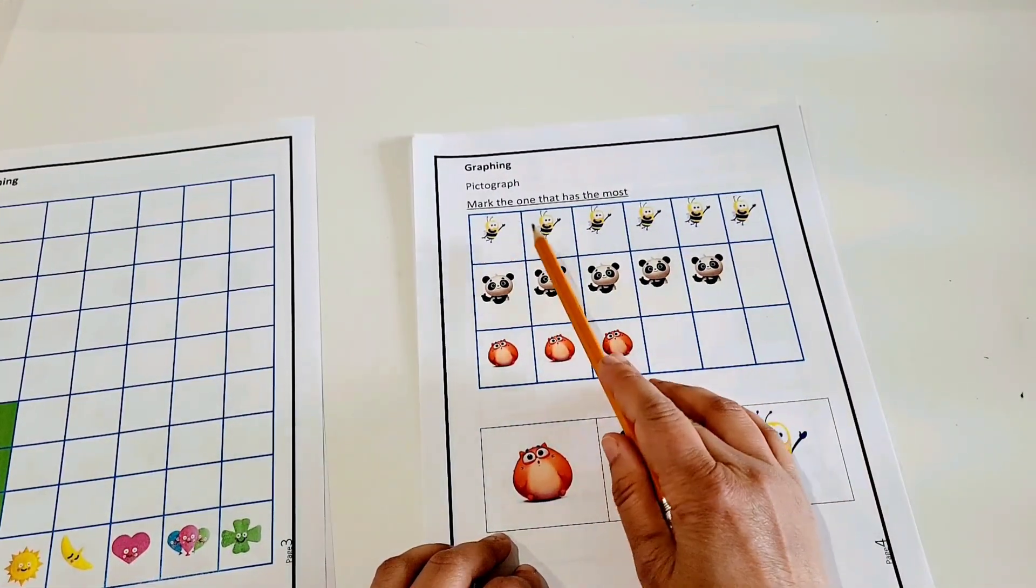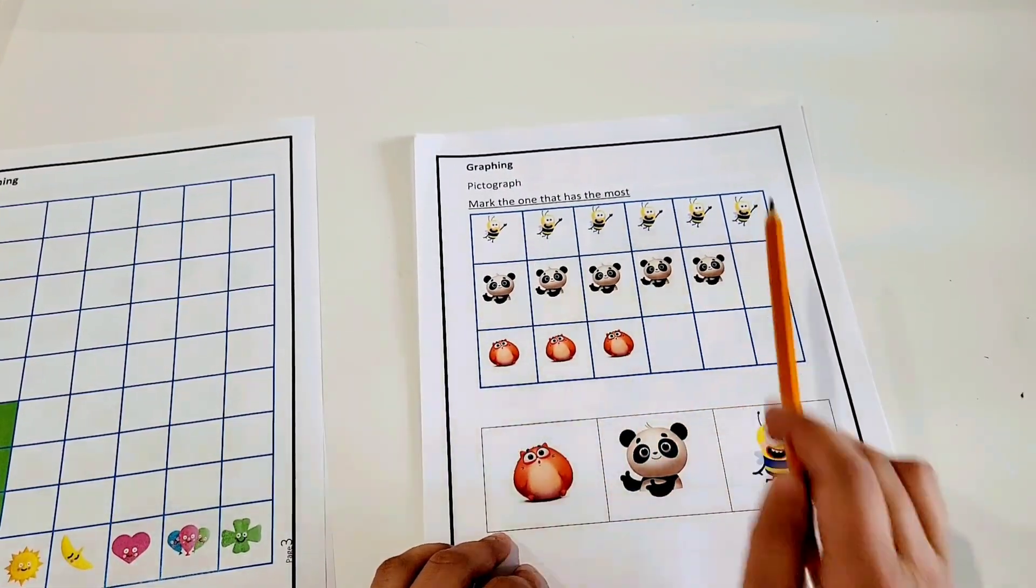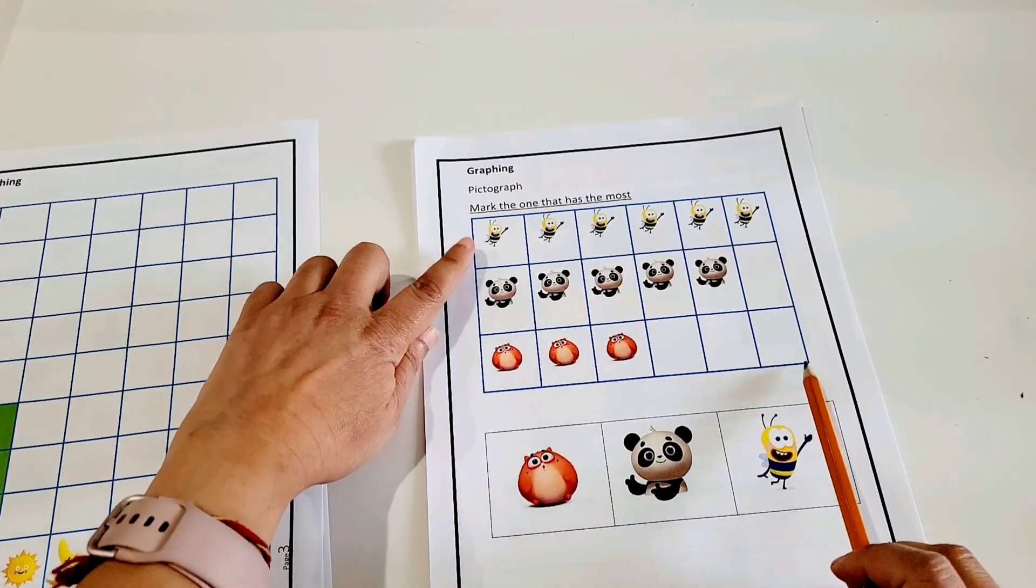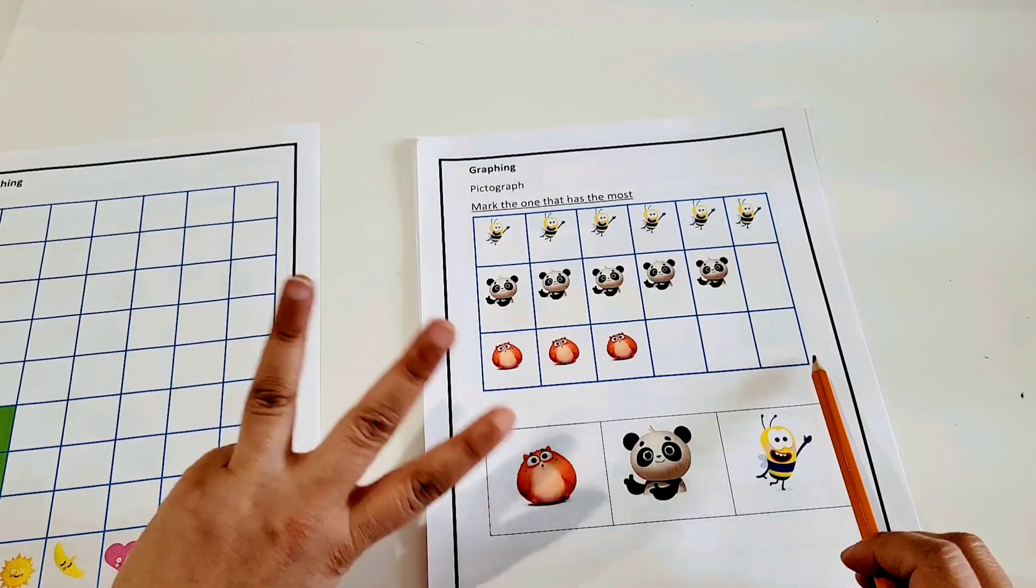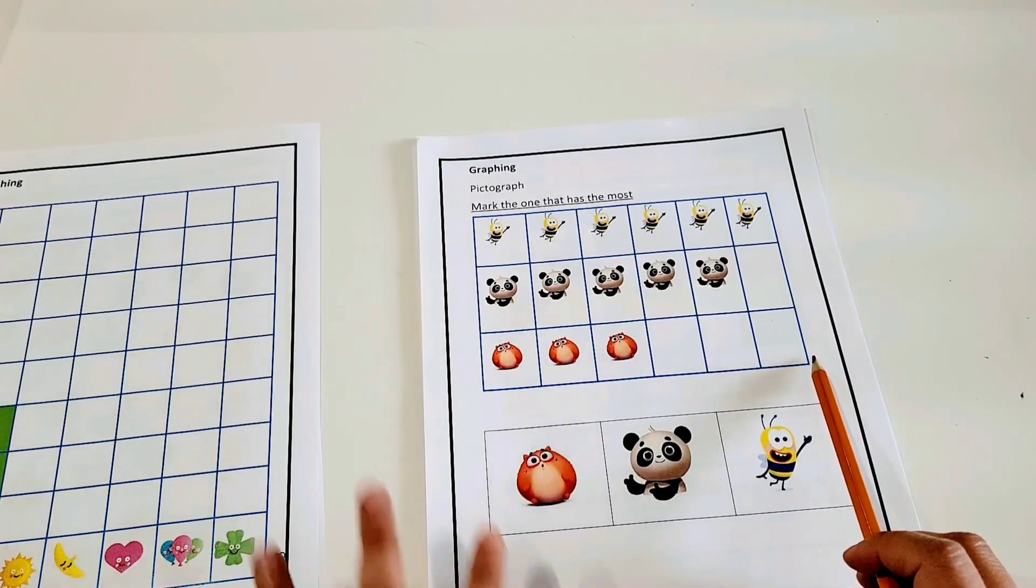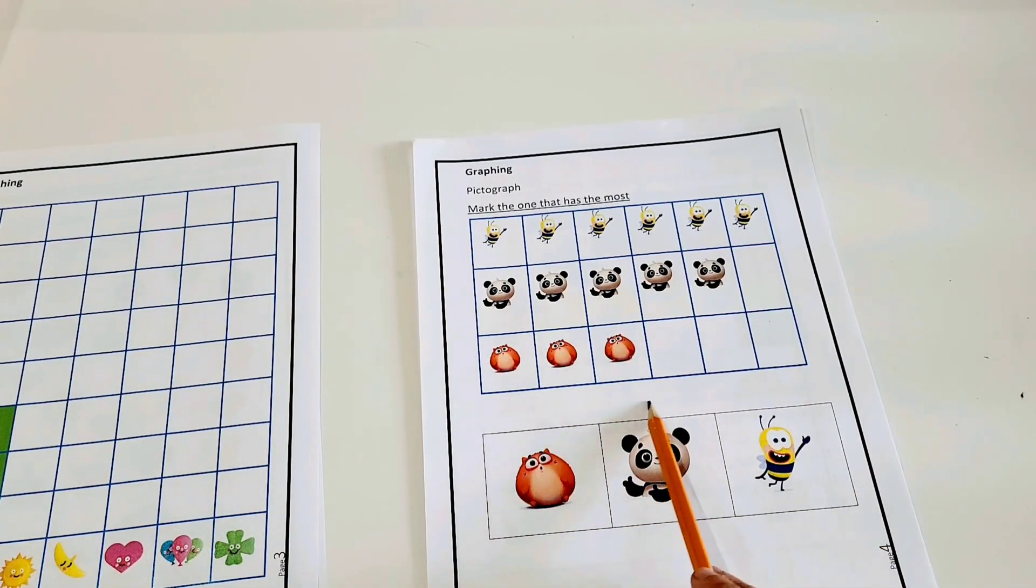Mark the one that has the most. The first thing is you look, there is a bee, a panda and a cat. So there are 3 different characteristics that are given here. So which one has the most?